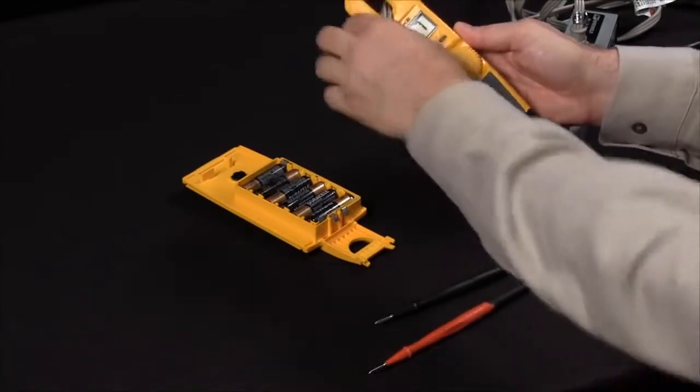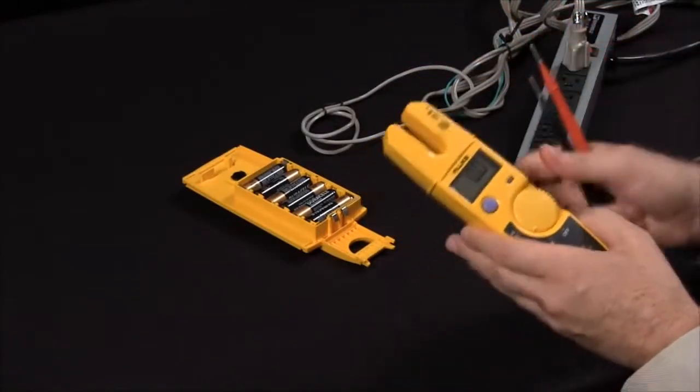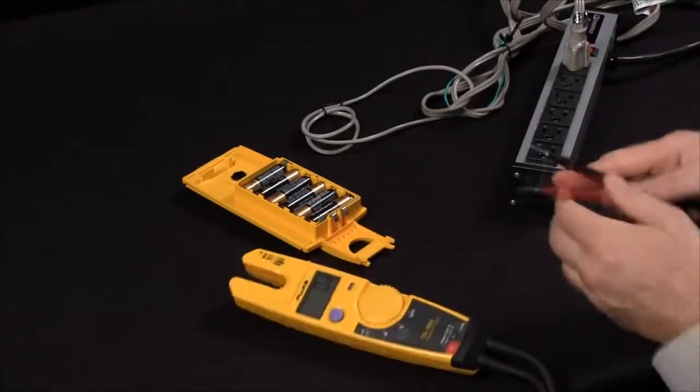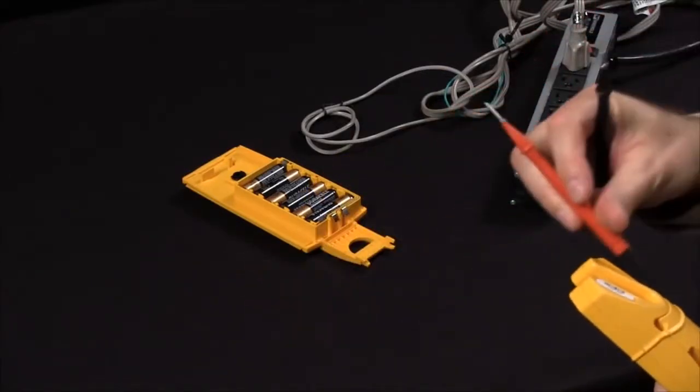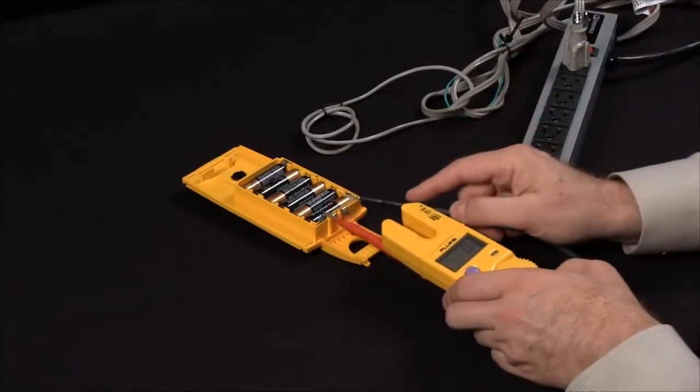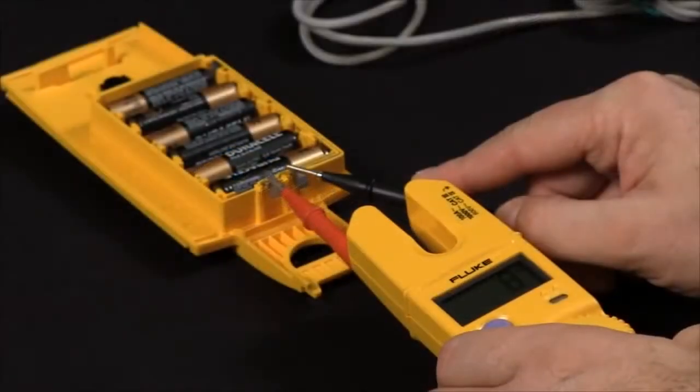To take a voltage measurement, it will auto range to either DC or AC. So move the dial position to measure DC volts, and what I'm going to do is take advantage of one of the lead slots. This will allow me to take a measurement on my battery pack here, and there we see 8 volts DC.